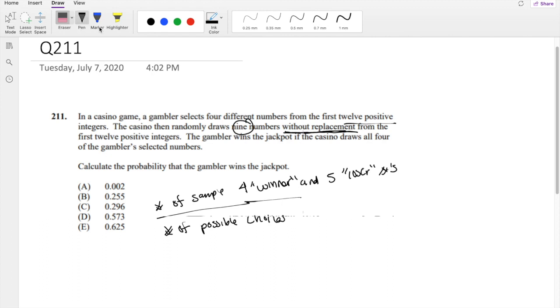I'm going to move this. So we're looking for the number of samples that results in 4 winners, or 4 cards that is exactly what the gambler picked, and 5 numbers that the gambler did not pick out of 12. So this is going to just be equal to...